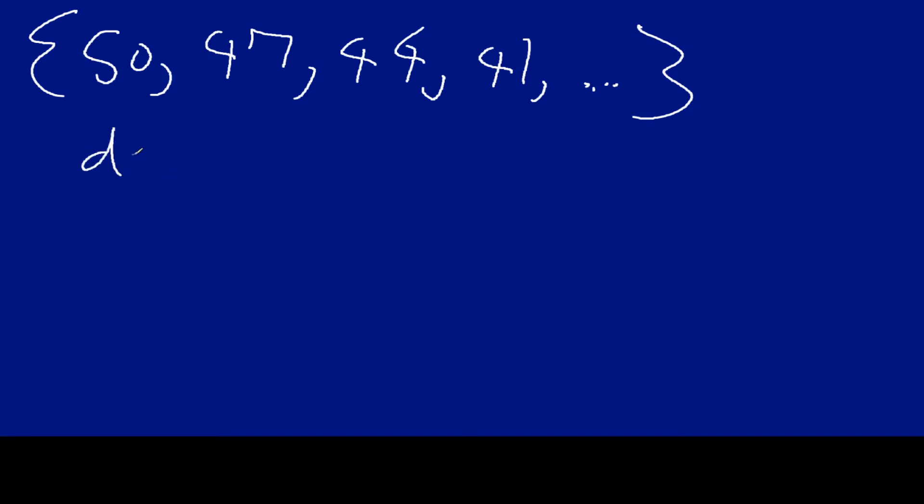First, we got to find our d. Oh, let me change the color here. First, I need to find my d. And so, that's going to be a2 minus a1. So, 47 minus 50. And so, our d here is going to be minus 3. All right. So, now we're going to plug this into our generic formula. We've done this before.